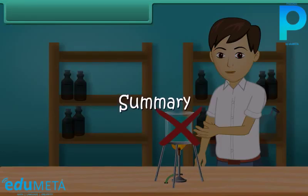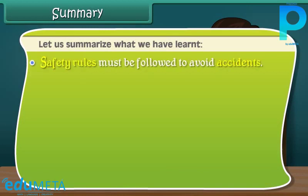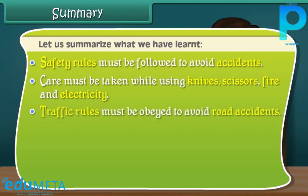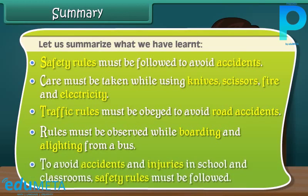Summary. Let us summarize what we have learned. Safety rules must be followed to avoid accidents. Care must be taken while using knives, scissors, fire, and electricity. Traffic rules must be obeyed to avoid road accidents. Rules must be observed while boarding and alighting from a bus. To avoid accidents and injuries in school and classrooms, safety rules must be followed.